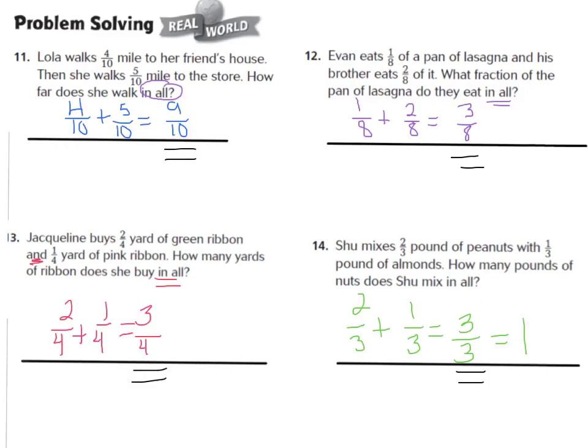Okay, let's go over our answer. Number 11 says, Lola walks 4 tenths miles to her friend's house, then she walks 5 tenths miles to her store. How far does she walk in all? That's an addition problem. So we should have said 4 tenths plus 5 tenths equals 9 tenths. Number 12 says, Evan eats 1 eighth pan of lasagna, and his brother eats 2 eighths of it. What fraction of the pan of lasagna did they eat in all? We should have said 1 eighth plus 2 eighths equals 3 eighths.